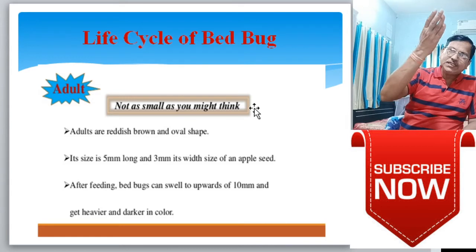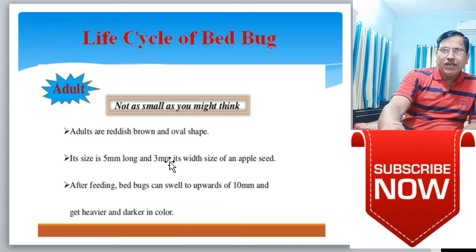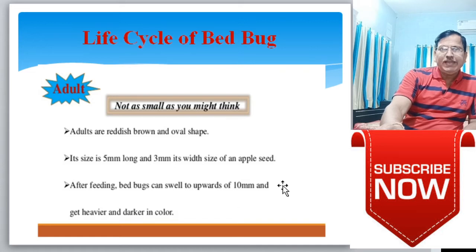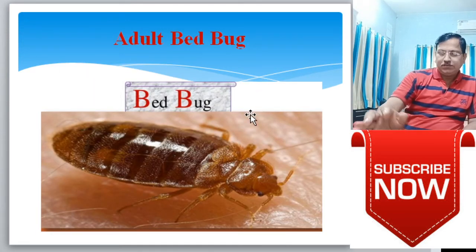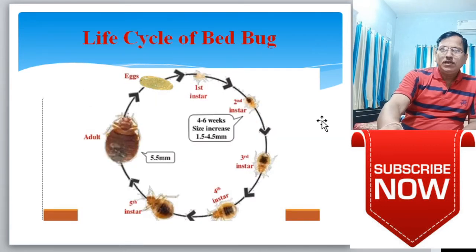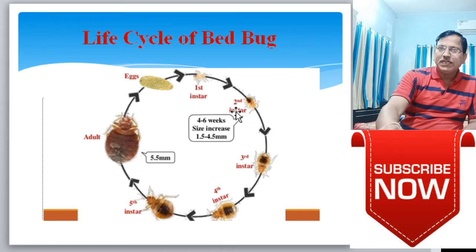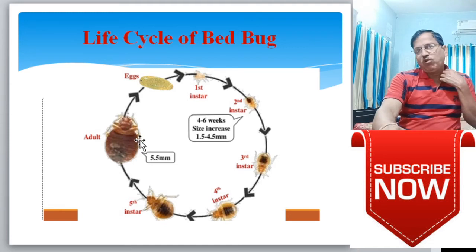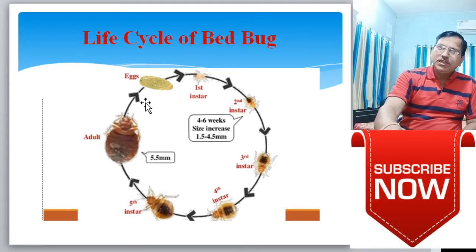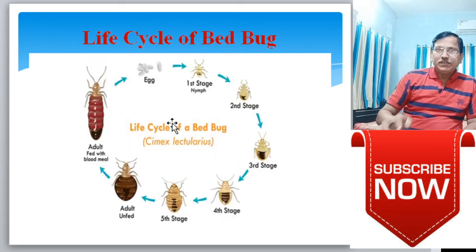The adult stage: adults are reddish-brown. As already discussed in morphology, the size is 5 mm long and 2 mm in width - the size of an apple seed. After feeding, bed bugs can swell to upwards of 10 mm and become darker in color. The schematic life cycle goes: eggs → first instar nymph → second instar → third → fourth → fifth nymphal instar → adult. After complete maturity, the adult is able to lay eggs again.